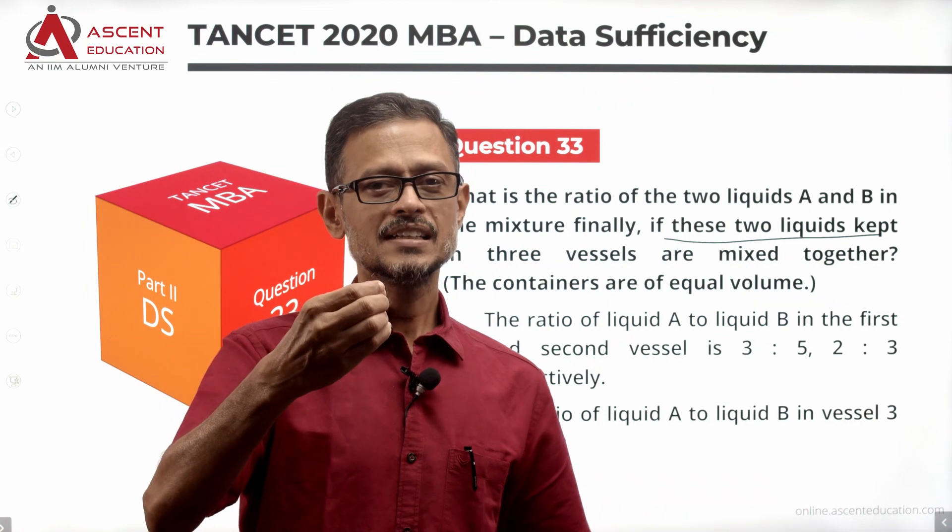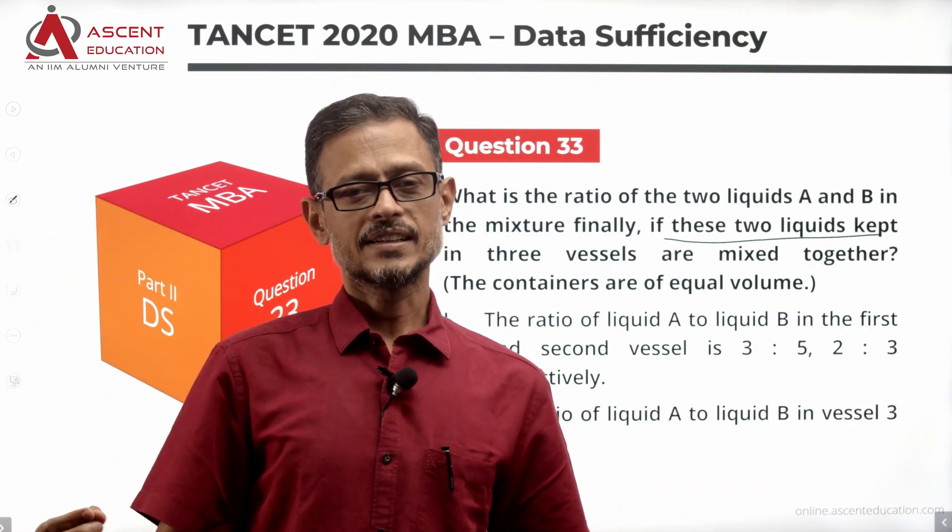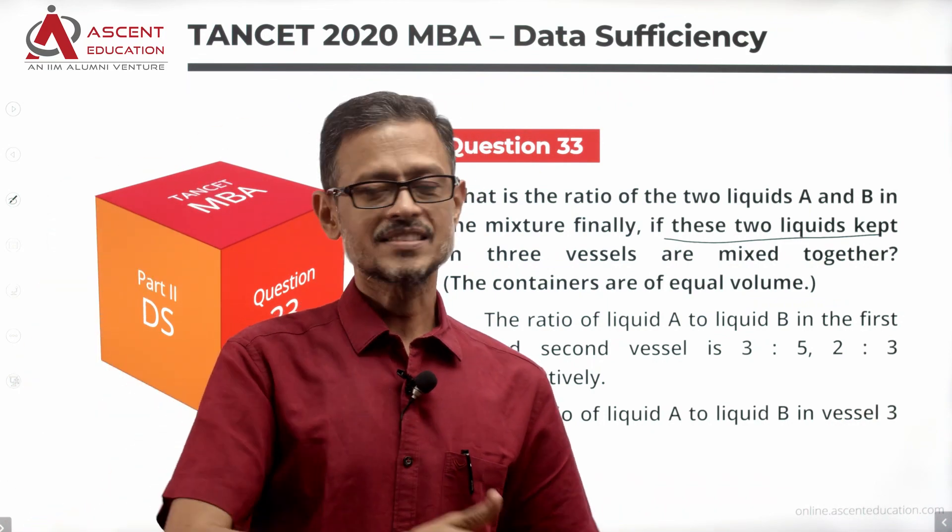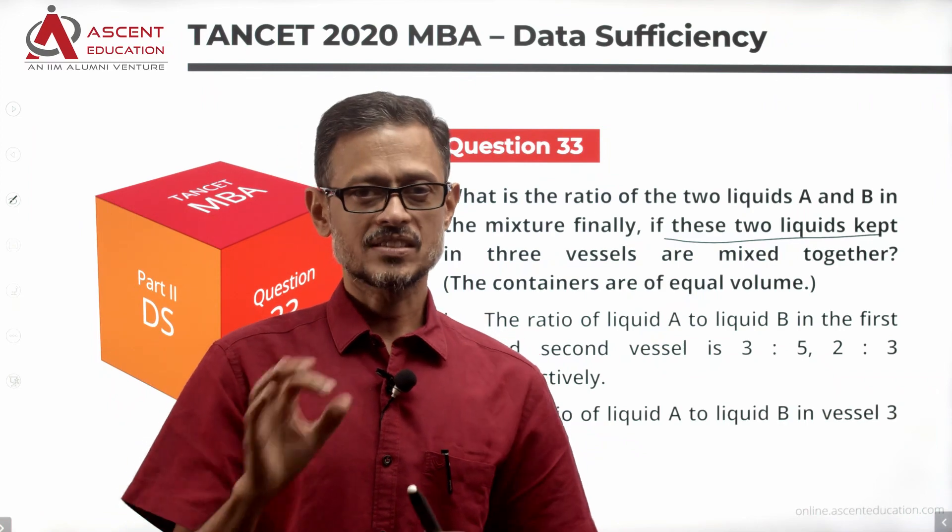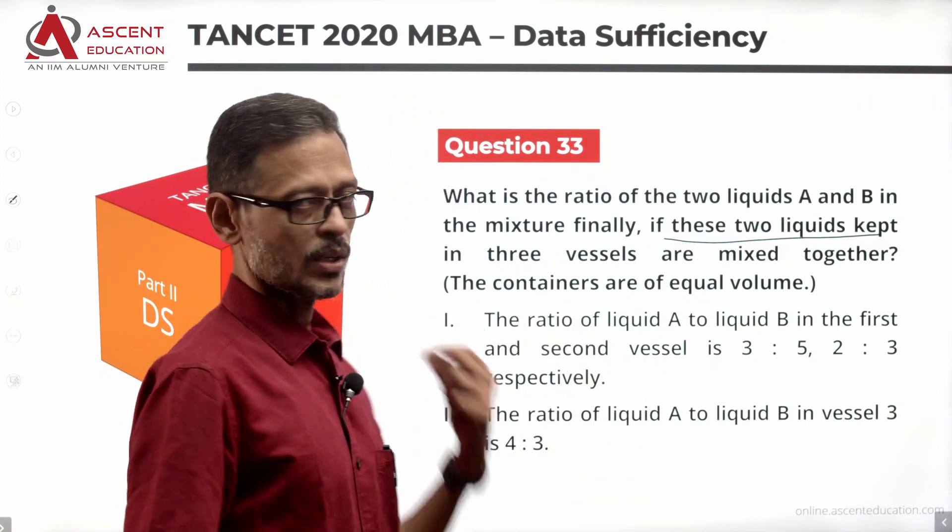So if one vessel is 100 liters, the other vessels are also 100 liters. If one vessel is 30 liters, all vessels are 30 liters. That's what they have said. Two statements follow that.